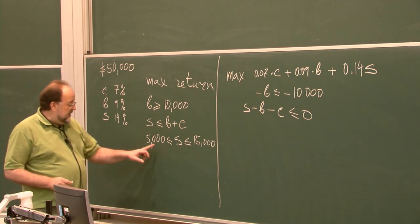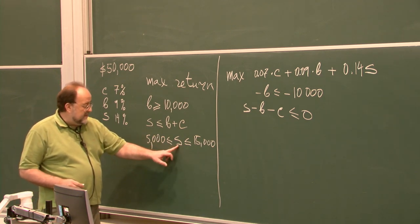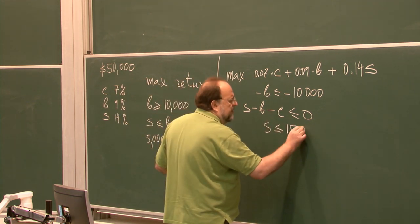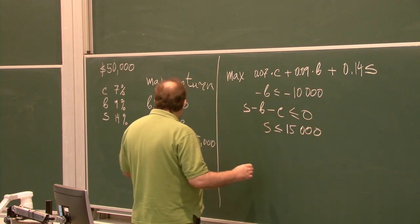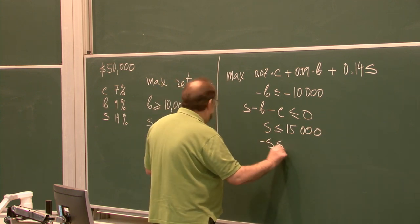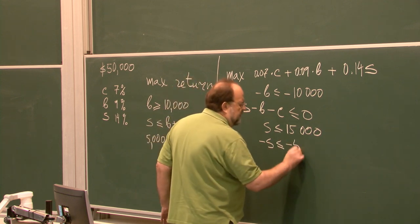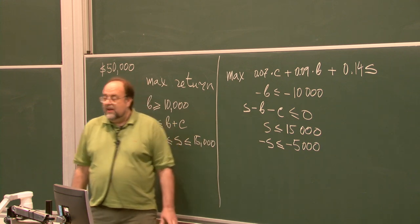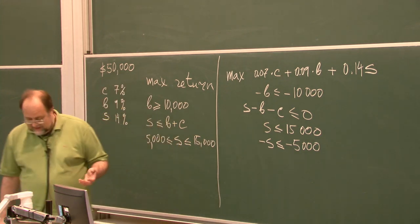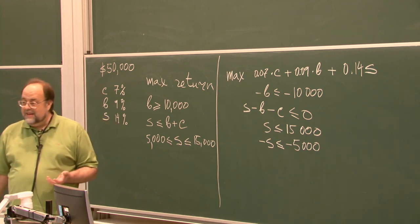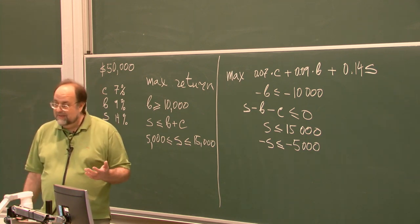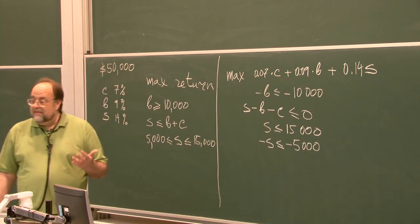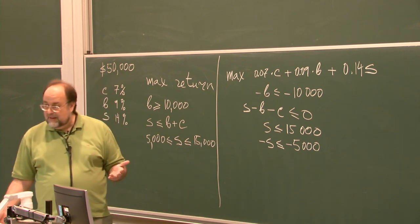The savings certificate constraint translates into C ≤ 15,000 and −C ≤ −5,000. Of course the amounts invested should be non-negative, though in practice some people take loans to invest in things like Bitcoin.